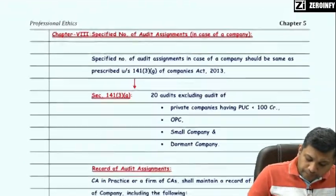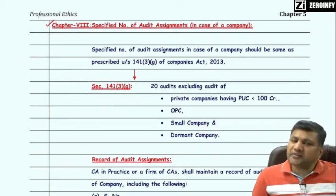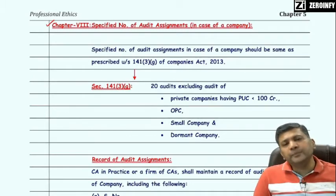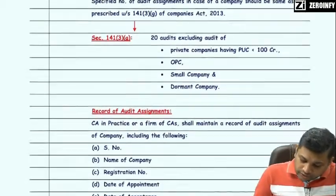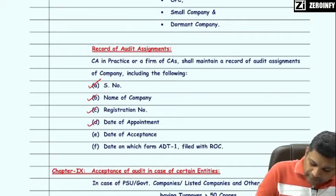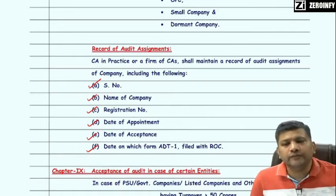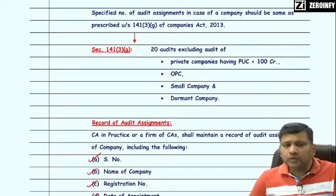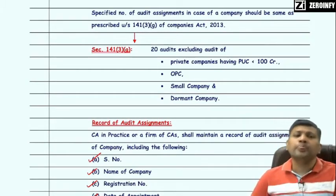Chapter 8 also covers the specified number of audit assignments in case of a company. The specified number of company audit assignments is the same as prescribed under Section 141(3)(g) of Companies Act 2013. The practicing CA or firm is required to maintain a record covering serial number, name of the company, registration number, date of appointment, date of acceptance, and the date on which Form ADT-1 was filed with the ROC.